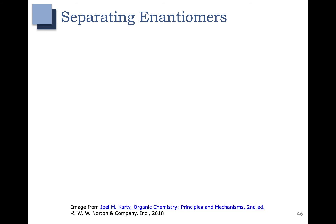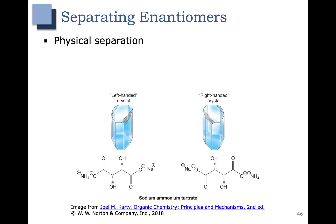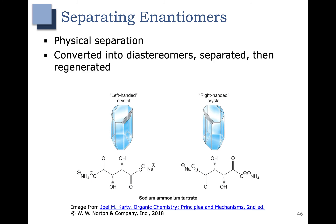Let's talk about separating enantiomers. You can do a physical separation — that's what Louis Pasteur did with sodium ammonium tartrate. He noticed under a microscope that there were left-handed and right-handed crystals, and he used tweezers to separate them. This is very tedious, so there are other approaches: you can do reactions that convert enantiomers to diastereomers, separate the diastereomers, then reform the enantiomers. You can also separate them in a chiral environment using a chiral separation method, since a chiral molecule will interact differently with different enantiomers.